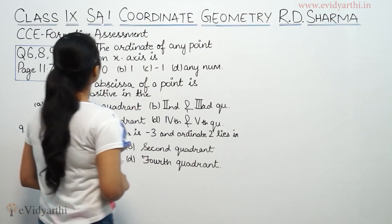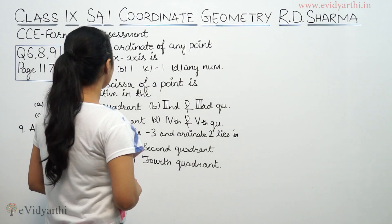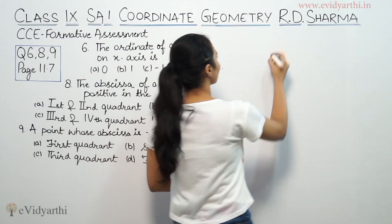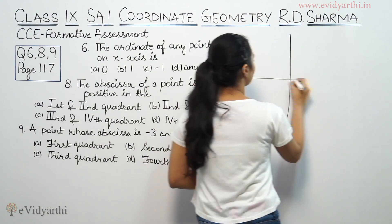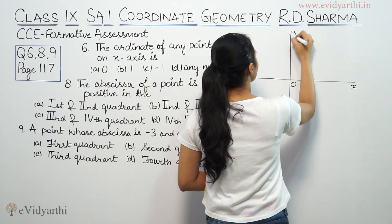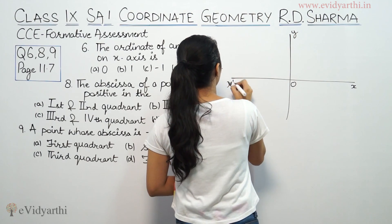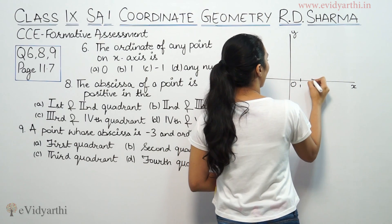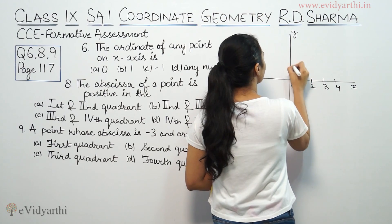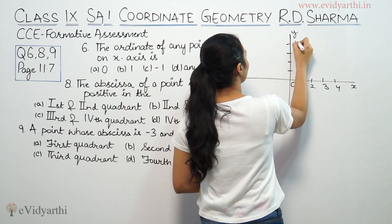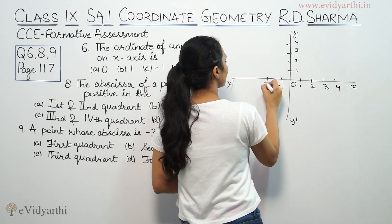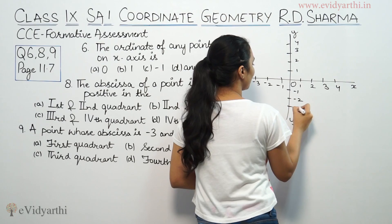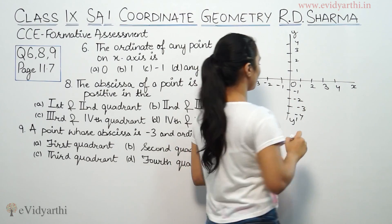The coordinate of any point on the x-axis has y equal to 0, 1, minus 1, or any number. Let me draw the coordinate axis. This is x, this is y, this is x-dash, and this is y-dash. On the positive side: 1, 2, 3, 4. On the negative side: minus 1, minus 2, minus 3, minus 4.